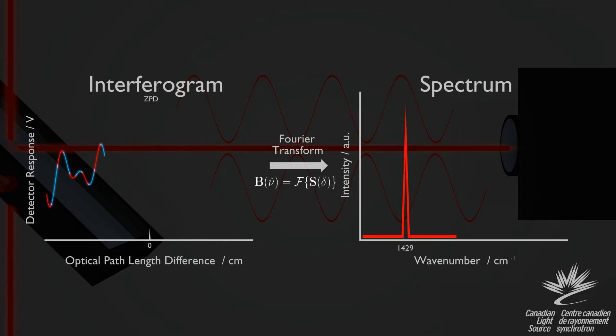Suppose we mix in a second color of light with the first. Now the interferogram is the sum of the two sine waves. Each component moves in and out of phase at a rate unique to that wavelength of light, as the mirror must move a different distance to cancel out light of a different wavelength. Taking the Fourier transform again, we observe another spike in addition to the first, located at the new wave number. This tells us that the interferogram is made from two discrete wavelengths.